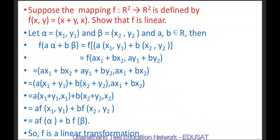This can be written as A·(x1+y1, x1) + B·(x2+y2, x2) = A·F(x1,y1) + B·F(x2,y2) = A·F(α) + B·F(β). Since F(Aα + Bβ) = A·F(α) + B·F(β), F is a linear transformation.